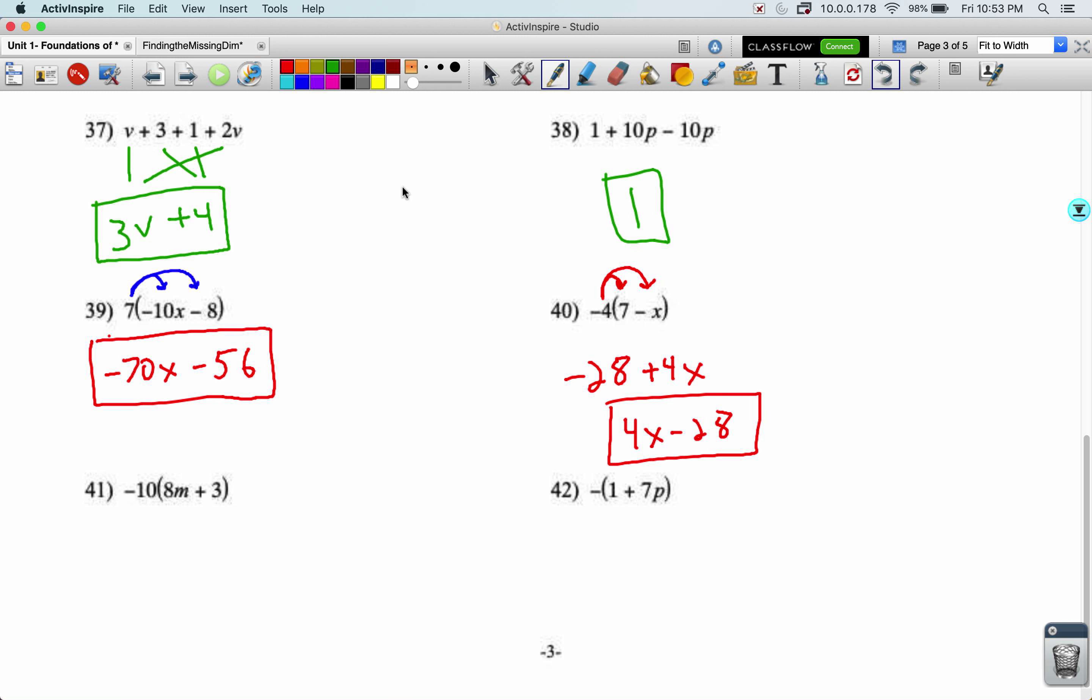With 42, we can distribute just a negative. This is going to become a negative one minus seven P, then rearrange that to be negative seven P minus one so that the constant is at the end.